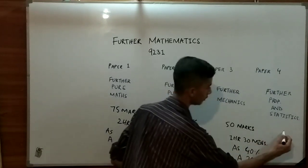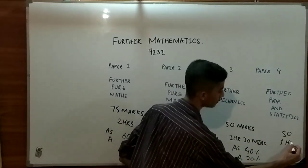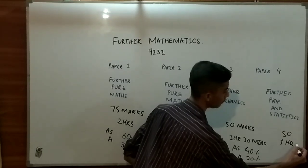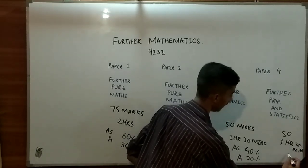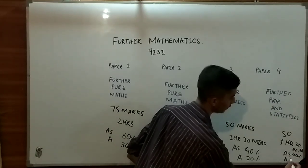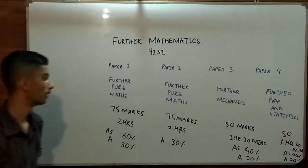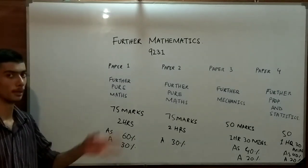Same as for paper 4: 50 marks, time duration of 1 hour and 30 minutes. In AS it has 40% when in A-levels it has 20%. Here we're done with the introduction of the paper, now we are just going to discuss about the content regarding the paper.